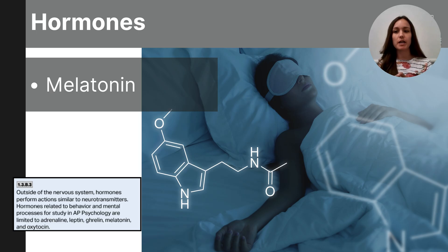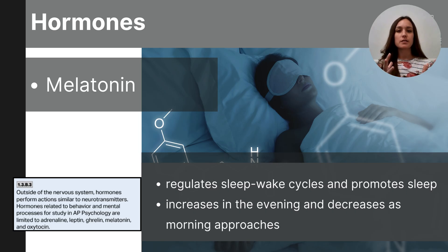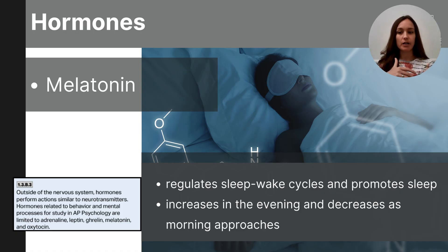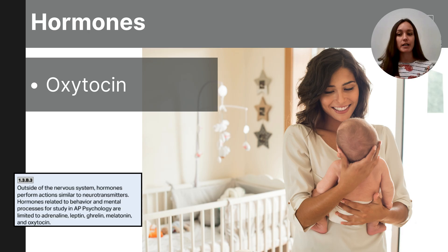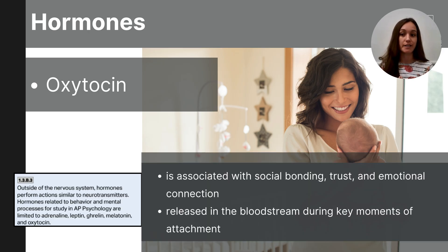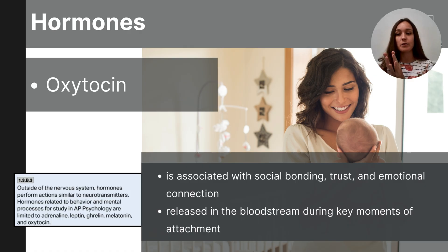Melatonin is a hormone released into the bloodstream that regulates our sleep and wake cycles, called the circadian rhythm. Melatonin promotes sleep, and its production is influenced by light and dark cycles. Levels typically increase in the evening, making us feel sleepy, and decrease in the morning as daylight returns, making us feel more wakeful. Oxytocin is often called the love or bonding hormone because of its role in social bonding and emotional attachment. It's produced by the hypothalamus and released by the pituitary gland, playing a key role in bonding between mother and infant and between romantic partners.